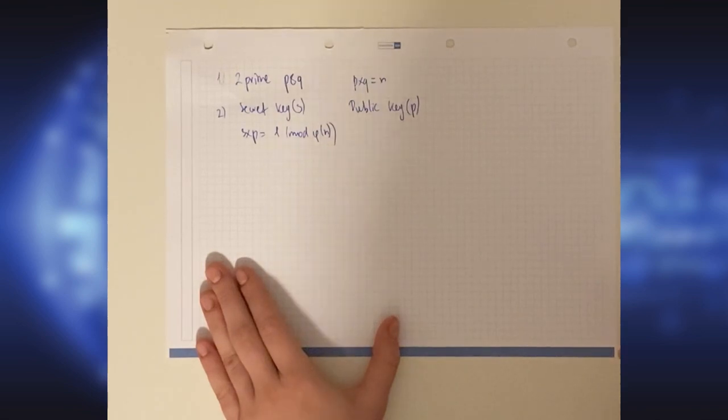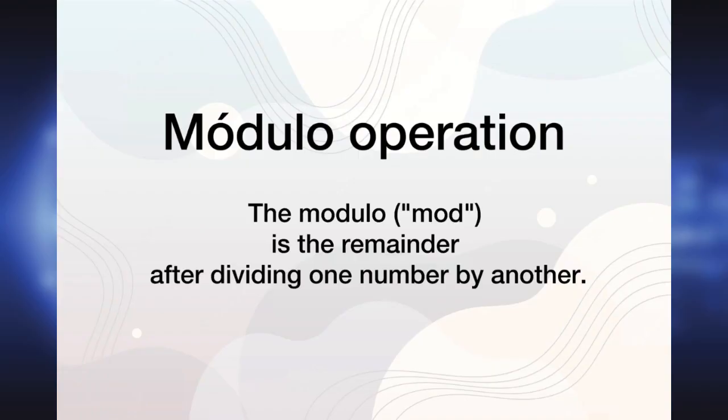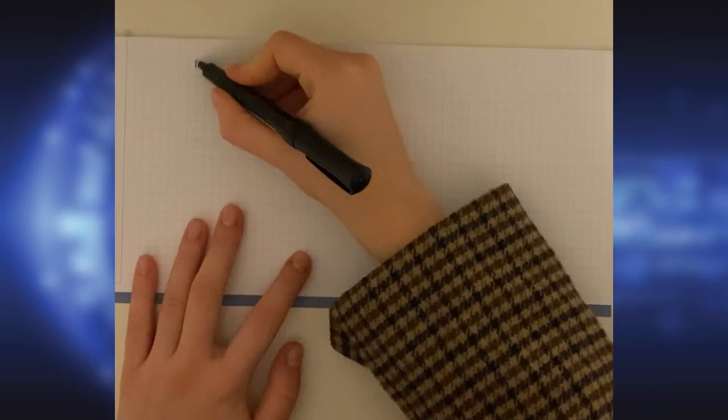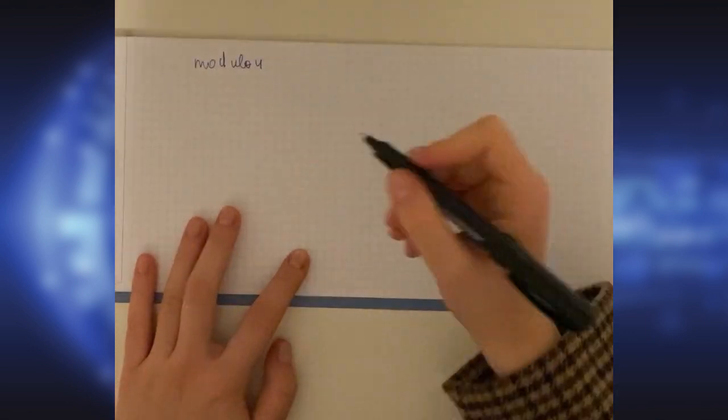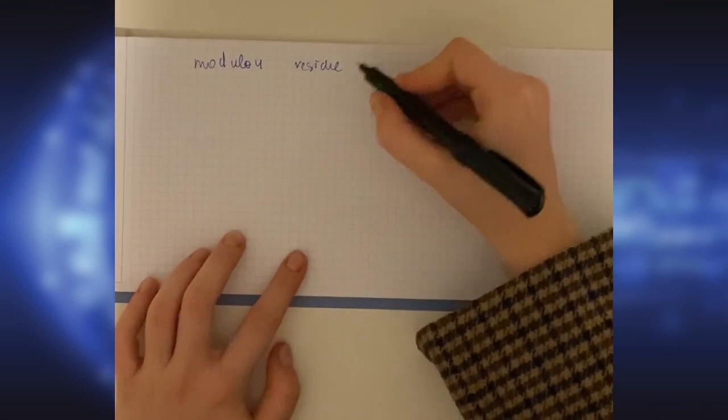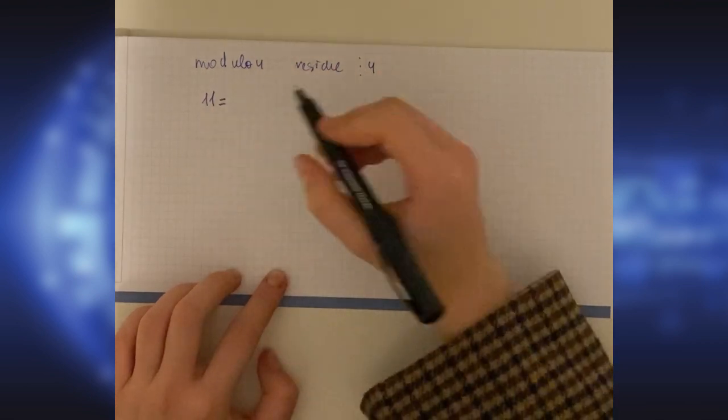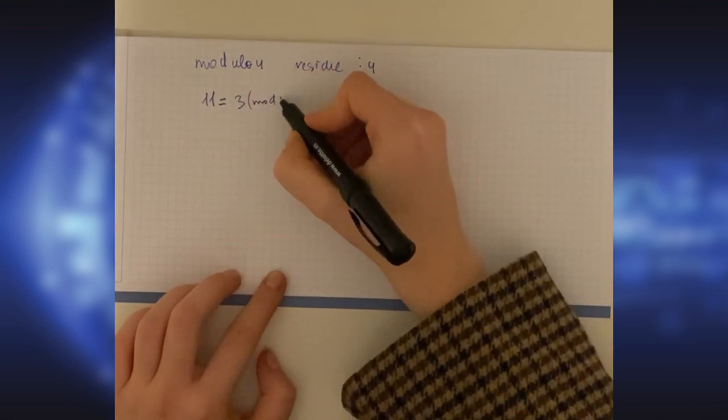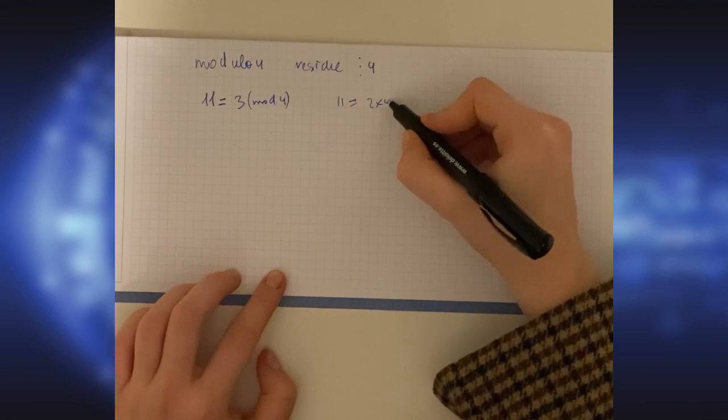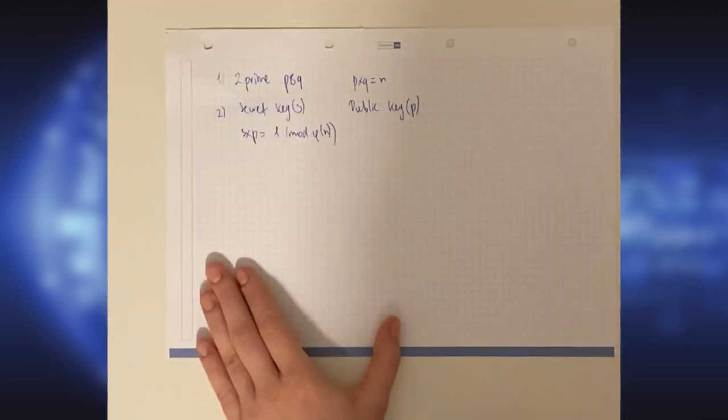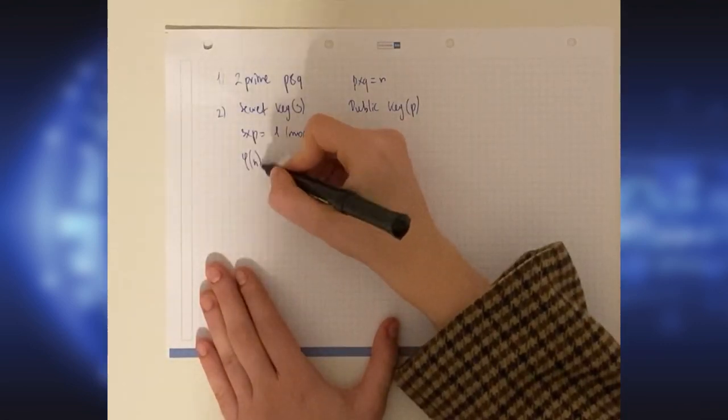What is modulus? For example, modulo 4 means the residue of division by 4. So 11 equals 3 modulo 4, because 11 equals 2 times 4 plus 3. And phi of N is Euler's totient function.